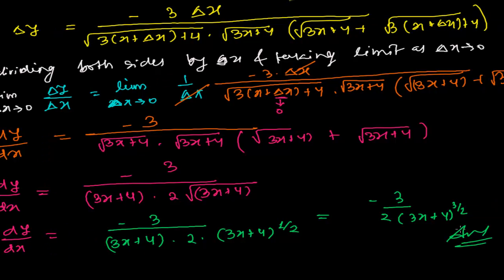This is how we find the derivative using the first principle method. No matter how big or small the function is, we just increment x by δx and y by δy, then follow the process. In upcoming videos I will cover the power rule and other differentiation rules, but the first principle method gives you the real foundational meaning.